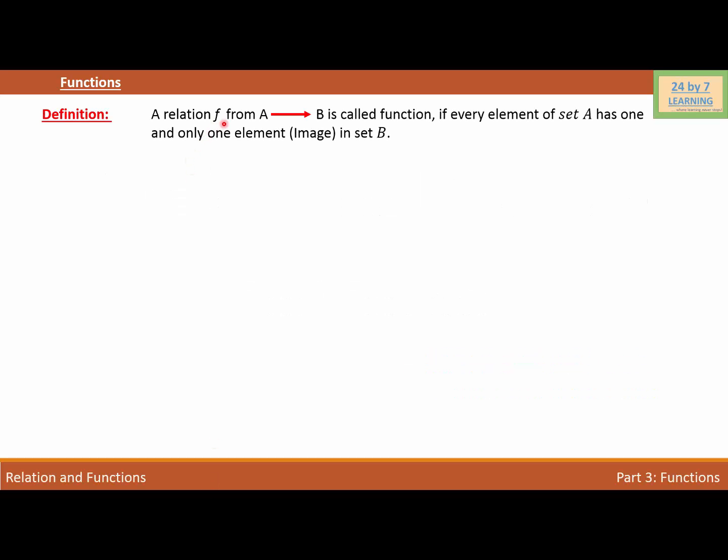Functions: A relation f from set A to set B is called a function if every element of set A has one and only one element in set B. The element of set A is called pre-image and the element of set B is called image.